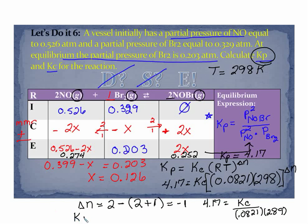That's the same thing as 4.17 equals Kc over 0.0821 times 298. If you do your cross-multiplying, we should get a value of Kc equal to 102. That's quite a bit to digest there, so I'm going to stop this video, and then we will move on to the next video where we will continue our discussion of RICE.